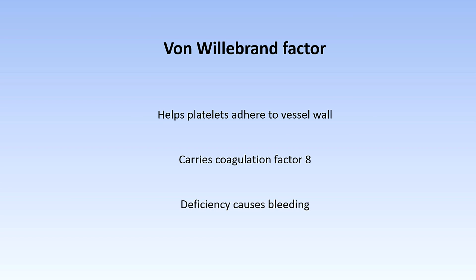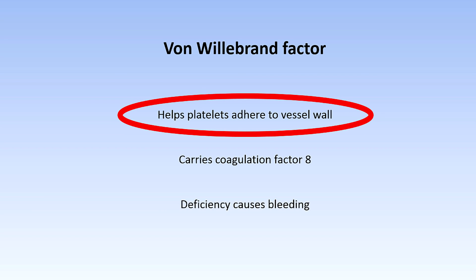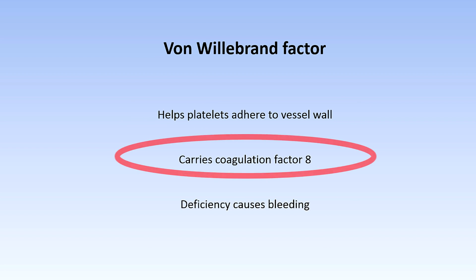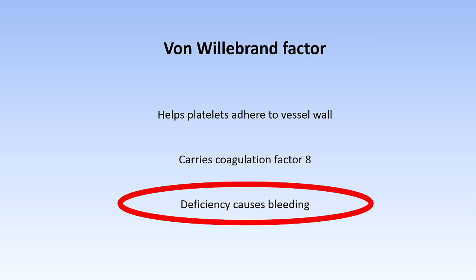You can't really talk about platelets without talking about von Willebrand factor. Von Willebrand factor helps platelets to stick to the blood vessel wall but it also helps them to stick together. It also carries factor 8, which is one of the factors found in the coagulation cascade. Von Willebrand factor is clearly really important in helping us form clots because people who don't have enough of it — in other words, people who have von Willebrand's disease — can have very severe problems with bleeding. In fact, von Willebrand's disease is the most common hereditary cause of bleeding disorders.